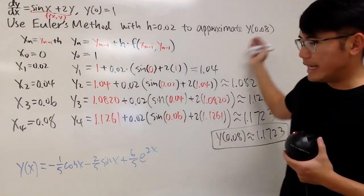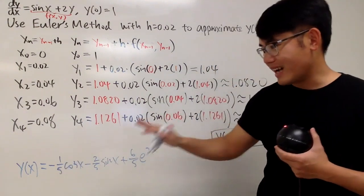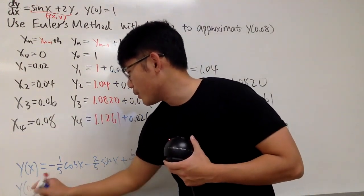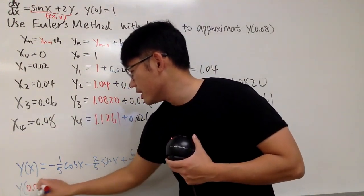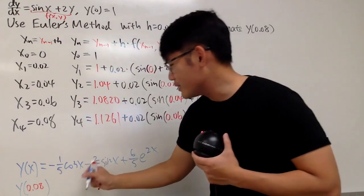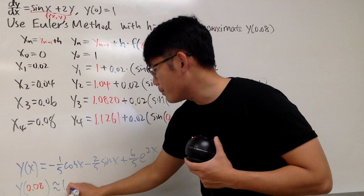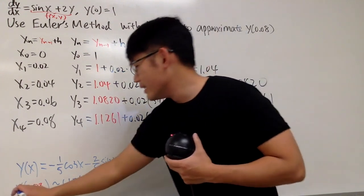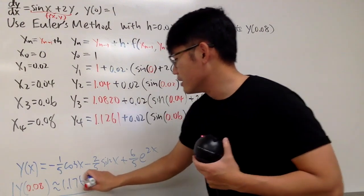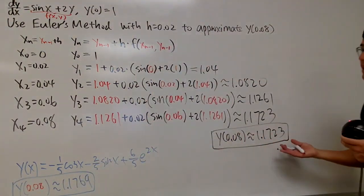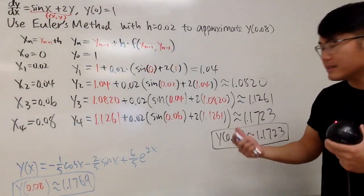And then, if you put in 0.08 into all the x by using the actual solution, let me tell you y of 0.08, just let x equal to 0.08, and you'll actually end up with 1.1769 approximately speaking. So this is the actual solution and this is our approximation. As you can see, it's actually pretty close. That's it.